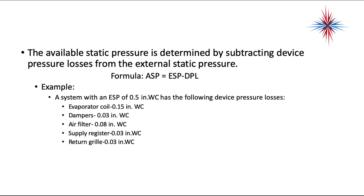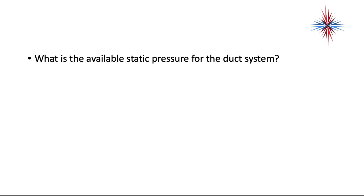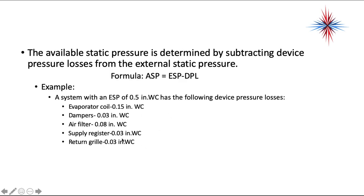The available static pressure is determined by subtracting the device pressure losses from the external static pressure. For example, with an external static pressure of 0.50 inches water column and device losses of: evaporator coil 0.15, dampers 0.03, air filter 0.08, supply register 0.03, and return grill 0.03 — totaling 0.32 — the available static pressure is 0.18 inches water column. The ductwork on the return and supply must be designed within that 0.18 inches water column.